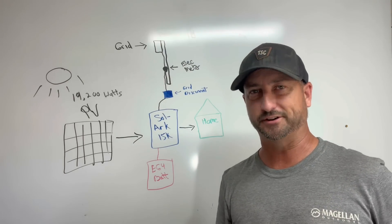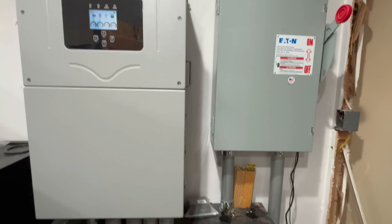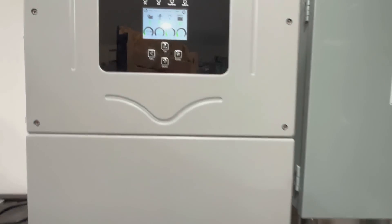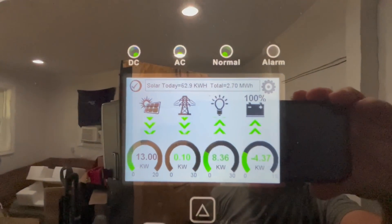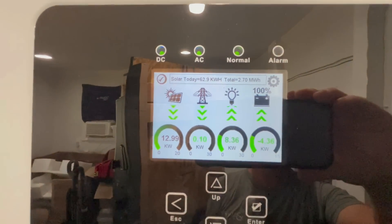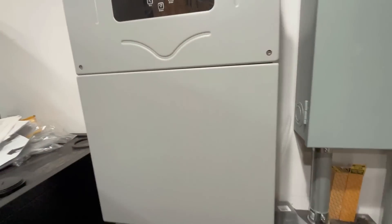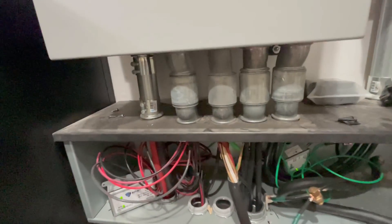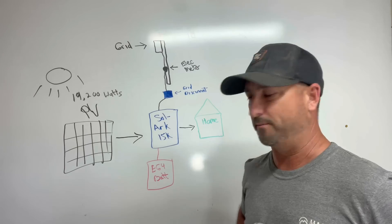The Solark 15k inverter is one of the largest inverters you're going to find out there. It allows you to connect up to 19,500 watts of solar panels on it. That's a lot. And out of that 19,500 watts of solar panels it can use 15,000 watts at a time to either run your loads or run your loads and charge your battery bank at the same time.